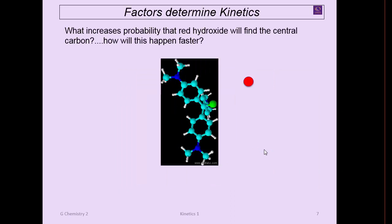What increases the probability that a red hydroxide will find the central carbon? How will this happen faster? I've just simplified down—instead of showing the OH, I've just put the oxygen atom to simplify things. In some of these figures, you're going to see a chlorine in there, and that isn't covalently bound in this particular structure. I've just got it attached to keep it in place, but that's an ionic bond. That is not a true covalent bond. In crystal violet, we'll talk about something that is covalently bound later on.